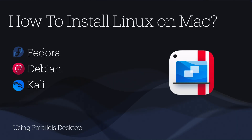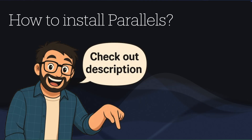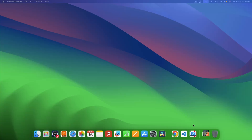Hey everyone, today I'm going to show you how you can install Fedora, Kali, Debian, and Ubuntu on macOS using Parallels Desktop. I will add timestamps below so if you want to install just one of the Linux flavors, you can jump directly to that timestamp. Also, if you want to know how to install Parallels Desktop, I will add another video in the description.